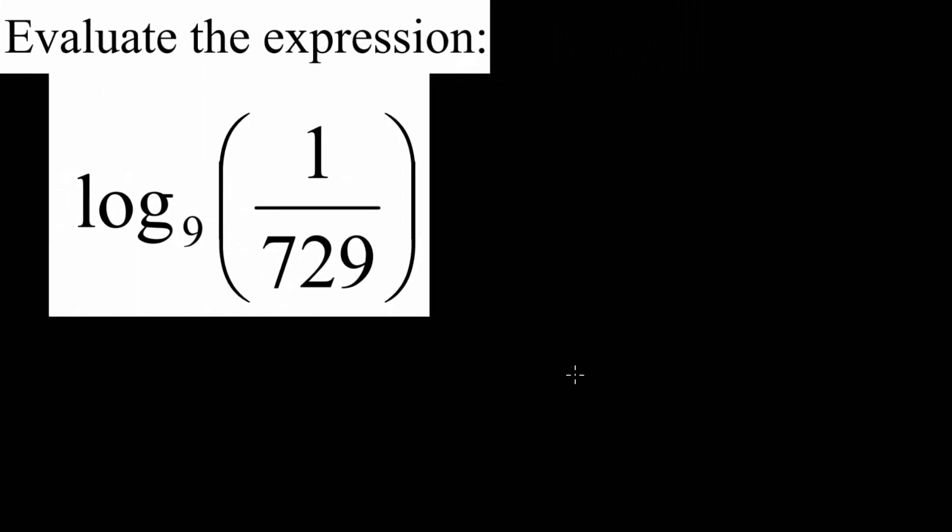When evaluating logarithms, we need to understand what this is actually asking. We have log base 9 of this fraction 1 over 729, and this is basically asking when we take 9 and we raise it to some exponent, we get this fraction here, 1 over 729. So we're looking for that missing exponent.